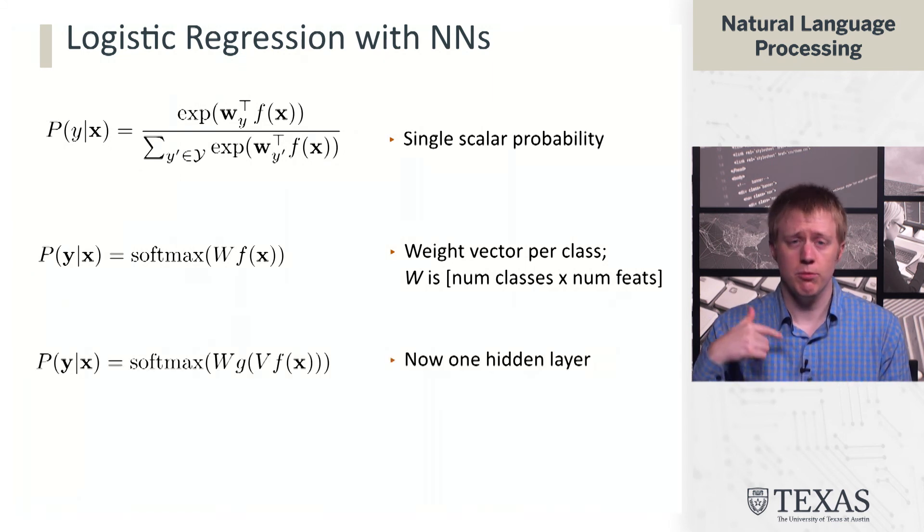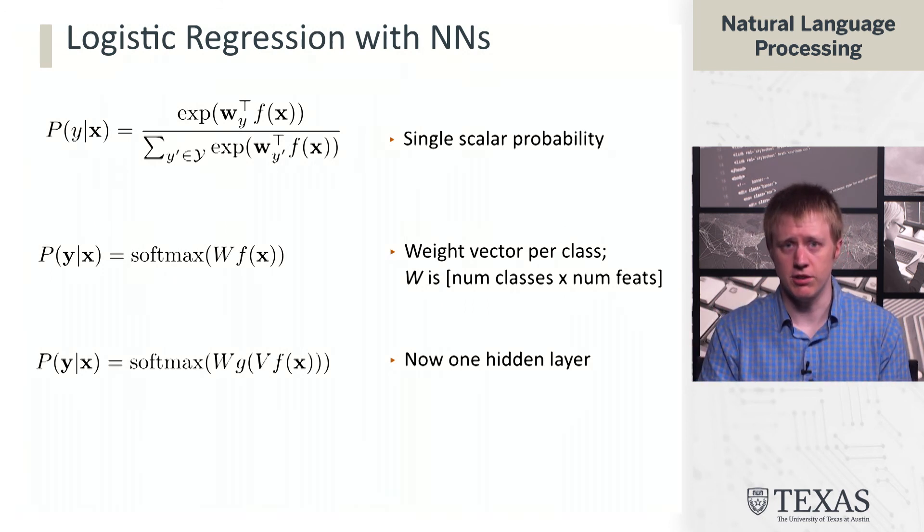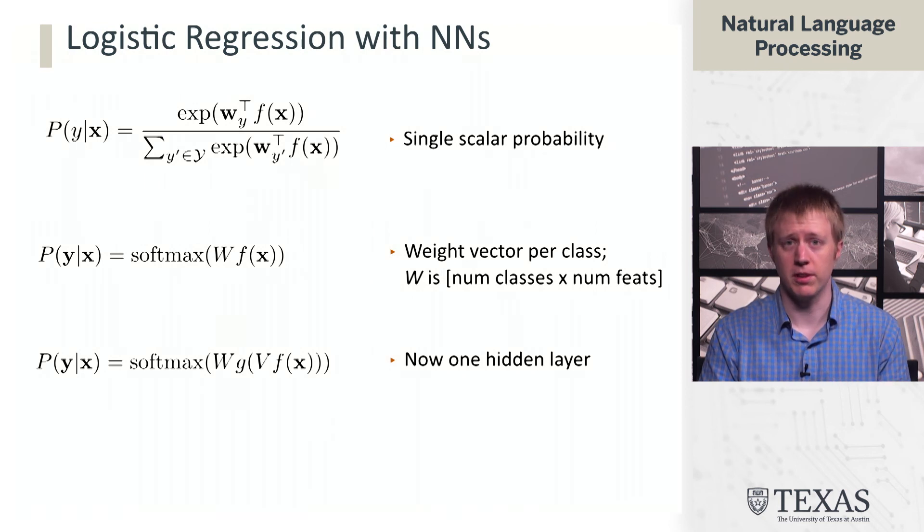Finally, what we can do is introduce this hidden layer which computes our latent feature z by multiplying V and applying g as we were doing before. Now we've gone from multiclass logistic regression to a feedforward neural network with one hidden layer, just by transforming this formula with a couple of extra mathematical operations.